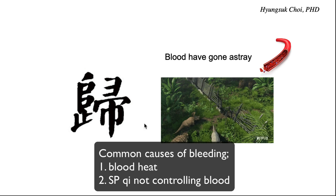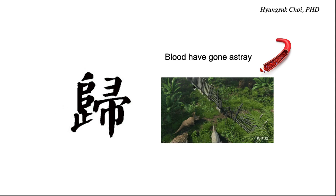The author of this formula used the term qi meaning 'let it go in the right, proper way.' That is what Guipi Tang does — fixing the fence, managing the sheep. So it is totally different from treating blood heat — exactly opposite. Blood heat is about the animals inside; this is about the fence.